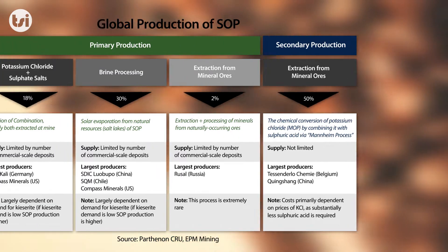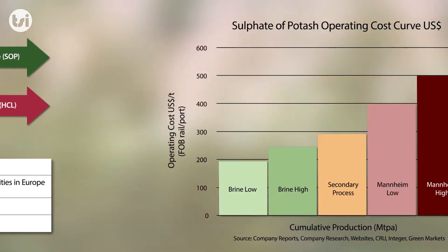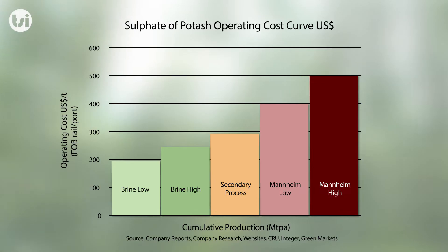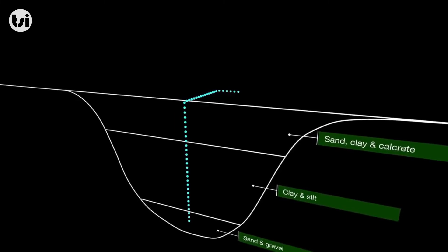The most common method is known as the Mannheim process. This process involves a secondary processing of MOP using sulphuric acid to produce SOP. This is however the more expensive method of production due to the high capital and operating costs.